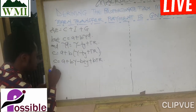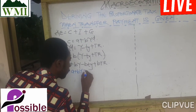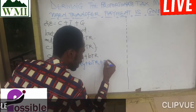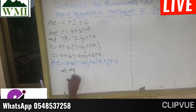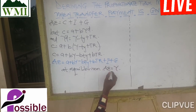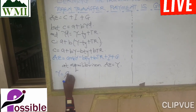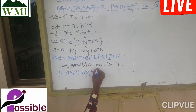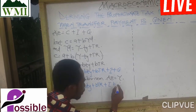Now we put it into the aggregate expenditure function. Aggregate expenditure equals income or output, so Y equals consumption — which is a plus bY minus bTY plus bTR — plus investment plus government spending.